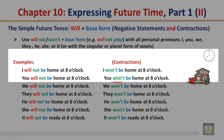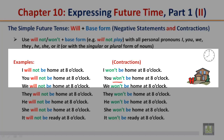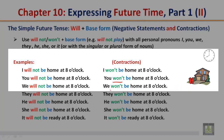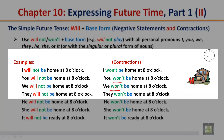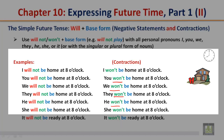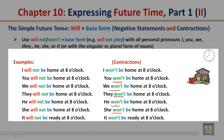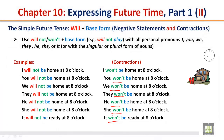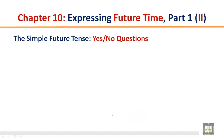Please note: 'won't' is the contraction of 'will not.' We will not / we won't be home at 8 o'clock. They will not / they won't be home at 8 o'clock. He will not / he won't be home at 8 o'clock. She will not / she won't be home at 8 o'clock. It will not be ready at 8 o'clock — it won't be ready at 8 o'clock.